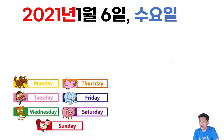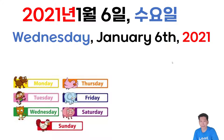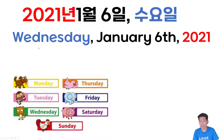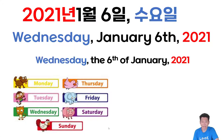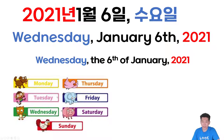이번에는 수요일이 더 붙어있네요? 그럼 수요일을 어디다 집어넣으면 좋을까요? 바로 앞에 붙이면 됩니다. 그거 앞에다가 Wednesday를 붙여서 Wednesday, January 6th, 2021. 아니면 Wednesday, the 6th of January, 2021. 이렇게 해도 좋습니다.